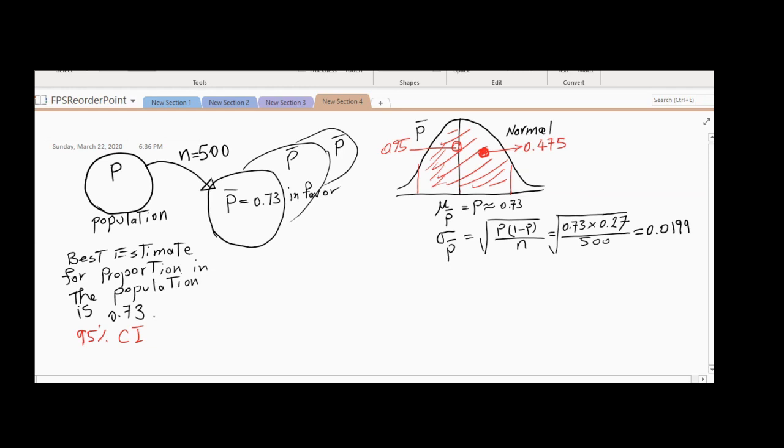Go to normal distribution and tell me what is the number of standard deviations that we have to go away from the mean such that 0.475 is the probability of this area. For 0.475 in normal distribution, what is the Z? Is it 1.96? Yeah, that is correct.